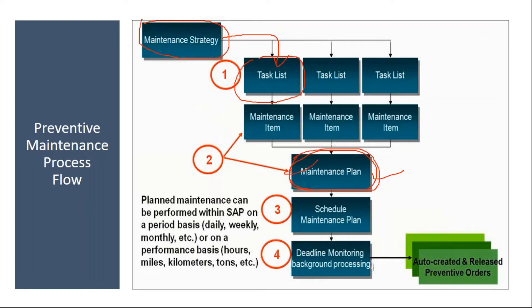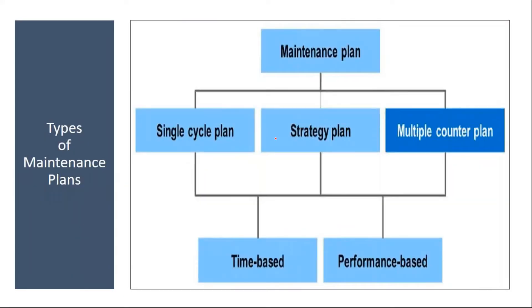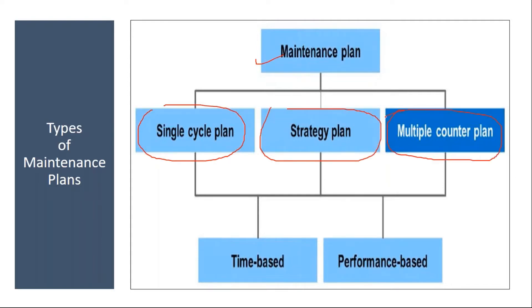In the plan, in the item, we will be assigning the task list. Maintenance plans are of three types - this we discussed already yesterday. One is single cycle plan, next one is strategy plan which is the multiple cycle plan, and then multiple counter plan.